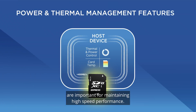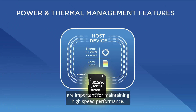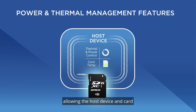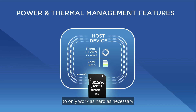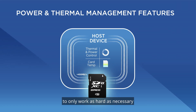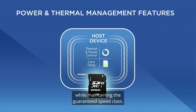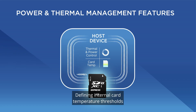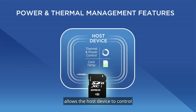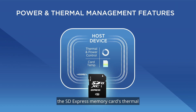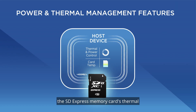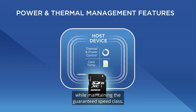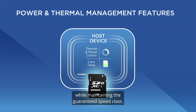The power and thermal management features are important for maintaining high-speed performance. This prevents excessive power consumption, allowing the host device and card to only work as hard as necessary while maintaining the guaranteed speed class. Defining internal card temperature thresholds allows the host device to control the SD Express memory card's thermals for optimal, uninterrupted recording speed while maintaining the guaranteed speed class.